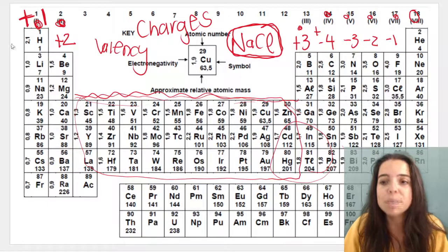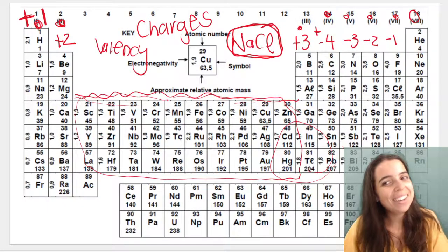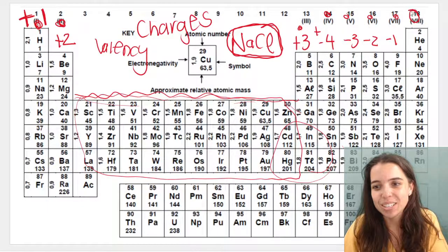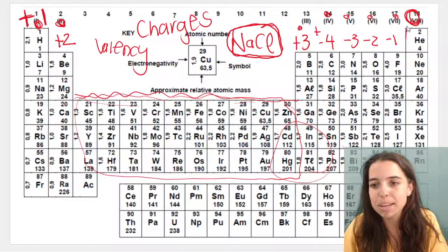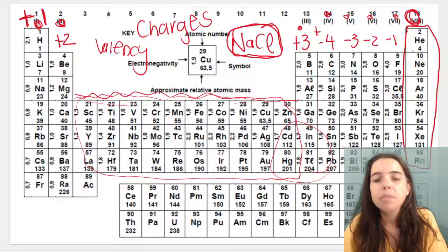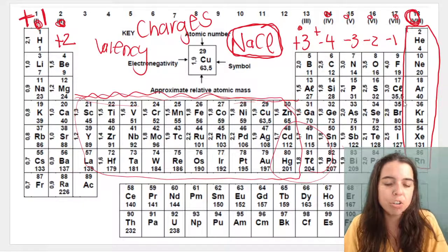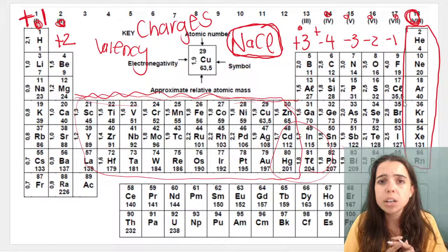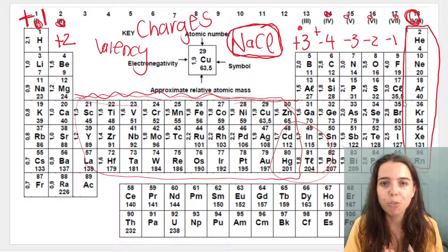They want to be like the noble gases, and if you don't know what the noble gases are, they are the guys with the charge of zero. Every single element wants to be like the noble gases. The noble gases don't want to bond with anyone. In general, they're happy by themselves, they're stable, their outer energy levels are full.